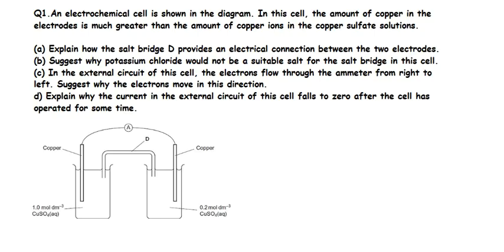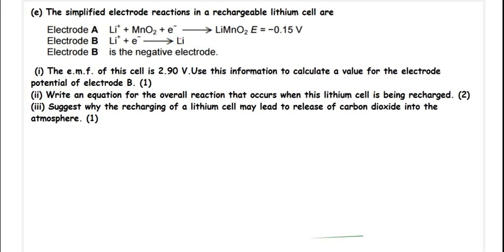Part D: Explain why the current in the external circuit of this cell falls to zero after the cell has operated for some time. This is a simple question. Eventually after the cell has been operating, the copper ions in its electrode will be at the same concentration. After the cell has been operating for some time, the concentration of the copper ions will be the same in both electrodes. There will be no emf or that difference, so there will be no flow of electrons any longer because of equal concentrations on both sides.